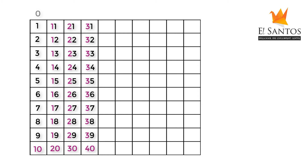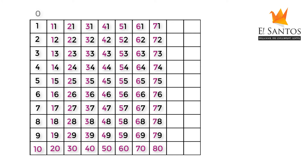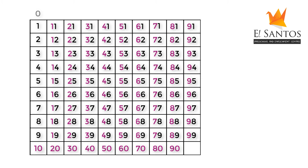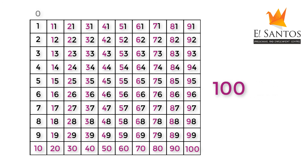In the same way, write out all the numbers, showing the children how each number is formed. Though it may seem time-consuming and repetitive, it's going to benefit the children greatly in understanding how the numbers propagate. When we get to 99, point out that after every 9, there is a tens number that ends with a 0. After 99, the next number is formed from 90 and 10, and it makes 100. Point out that 100 is a 3-digit number.